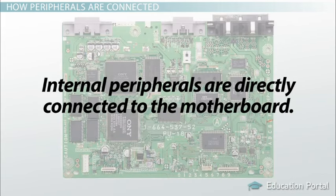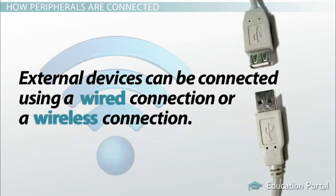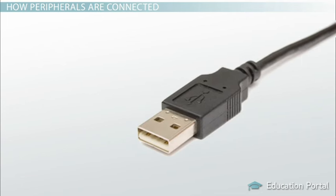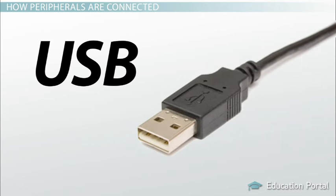Internal peripherals are directly connected to the motherboard using one of the different types of slots on the motherboard. External devices can be connected using a wired connection or a wireless connection. A wired connection uses a cable that needs to be plugged into the computer using a connector. The most widely used connector is a universal serial bus, or USB connection, but several other types are used depending on the specific computer system and the type of peripheral.